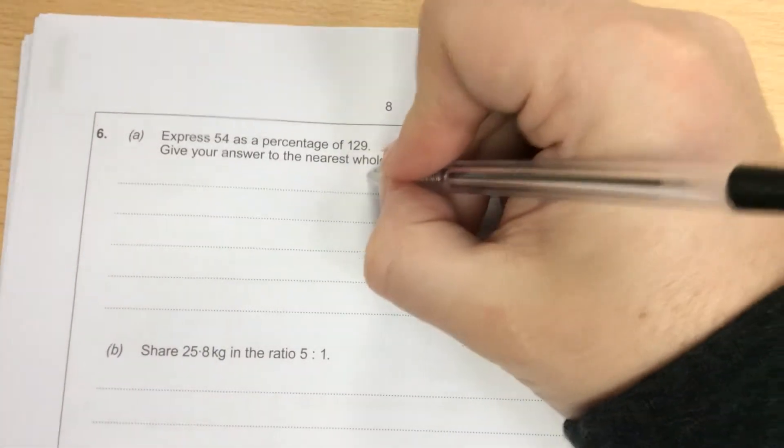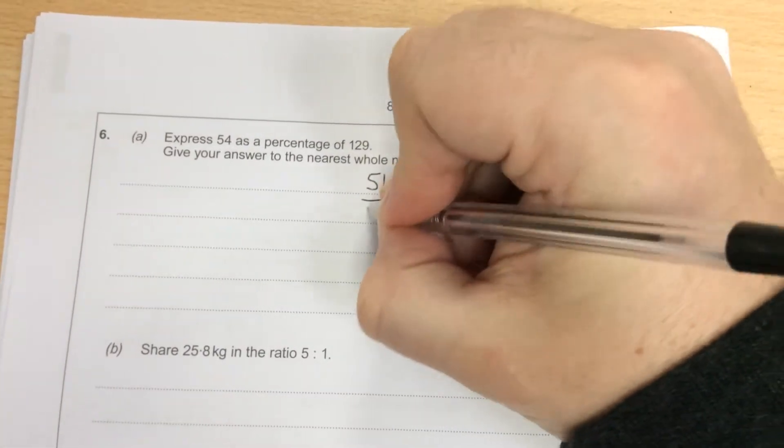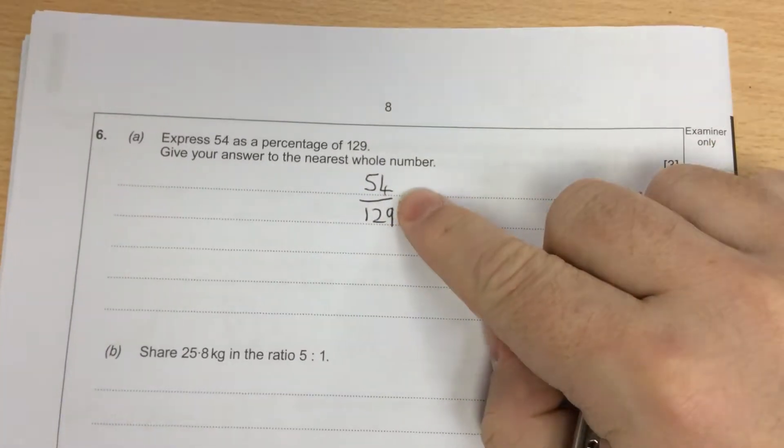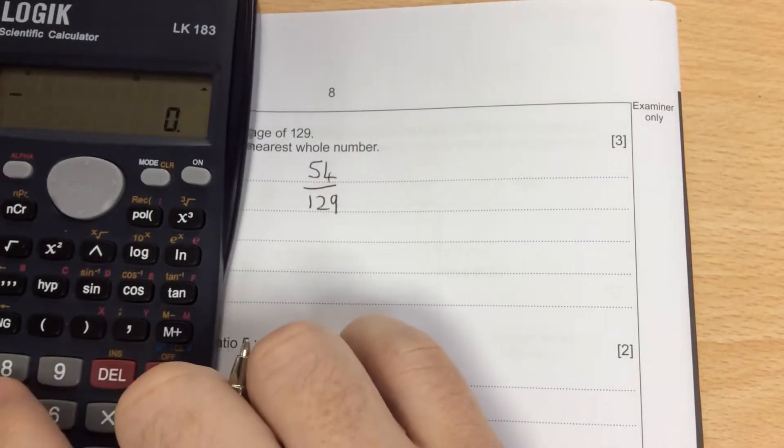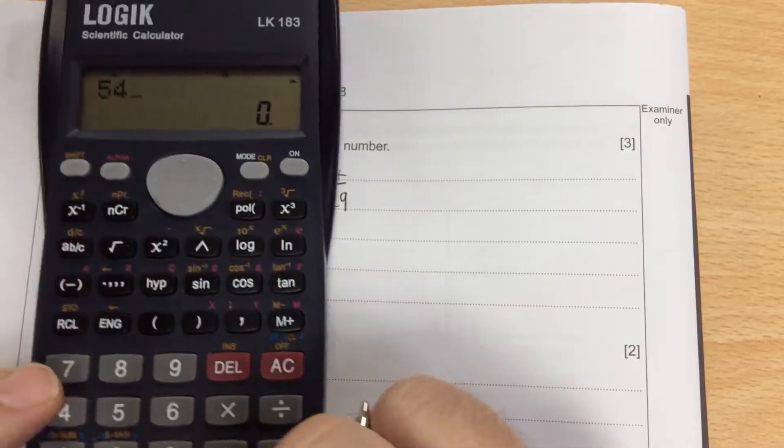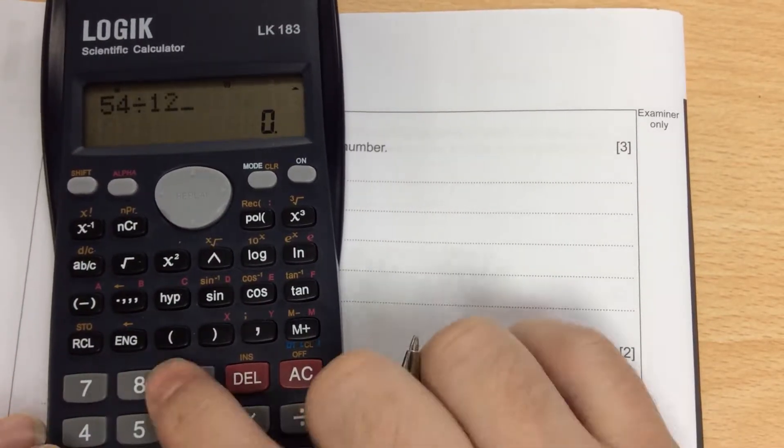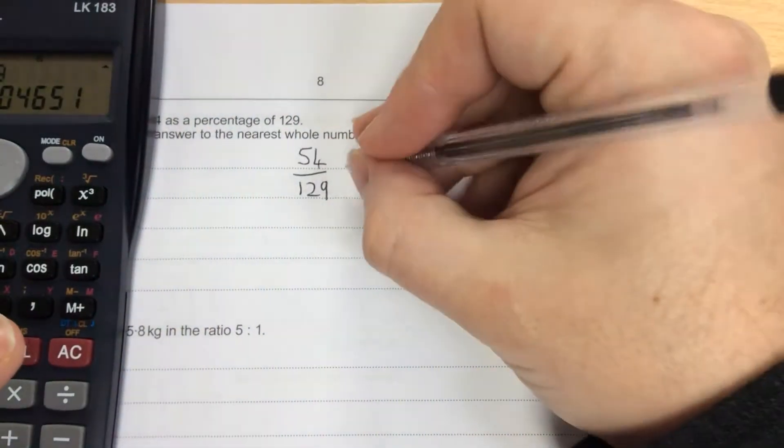Question 6. Express 54 as a percentage of 129. That line means divide. So when I'm typing that into a calculator, I'd be typing in 54 divided by 129 equals,